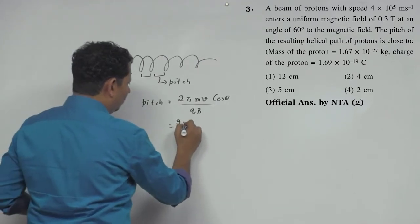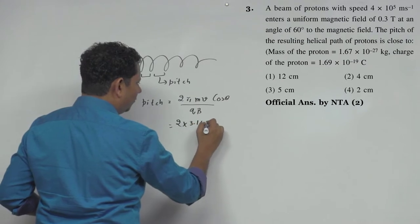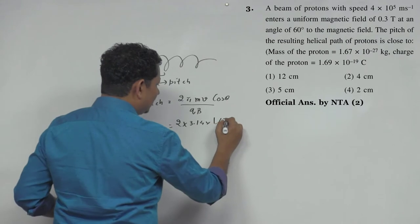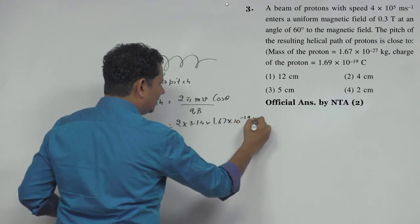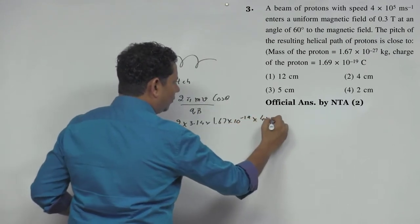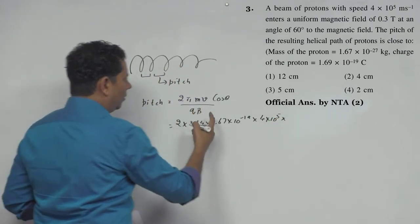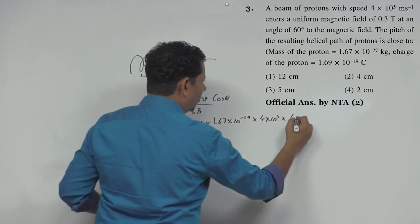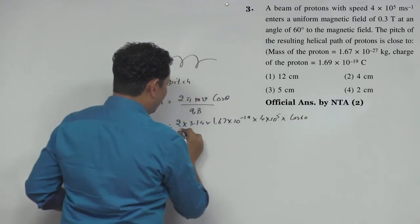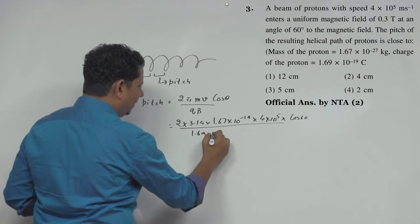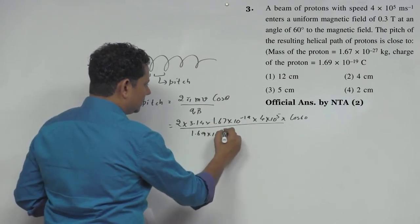So we multiply by π, which is 3.14, multiplied by m - m here is 1.67×10⁻²⁷. v is 4×10⁵ - that's what's given. And cos θ will be cos of 60 degrees. Divided by qB - q is given as 1.69×10⁻¹⁹.